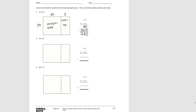For number 2, our first factor is 50 and our second is 41, which we write as 4 tens and 1 one. We figure out the area of the smaller rectangle first: 50 times 1 is 50. Then 50 times 40 would be 2,000. Adding them together, we get 2,050 as our total product.